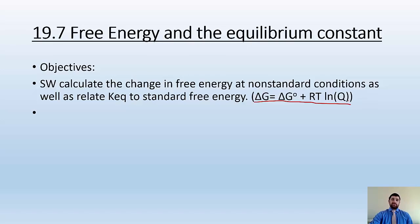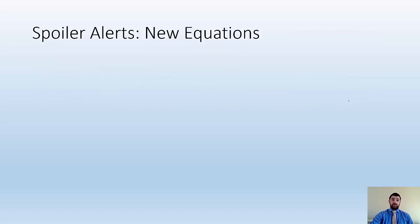Spoiler alert, new equations. We got this one, delta G equals delta G naught plus RT ln of Q.